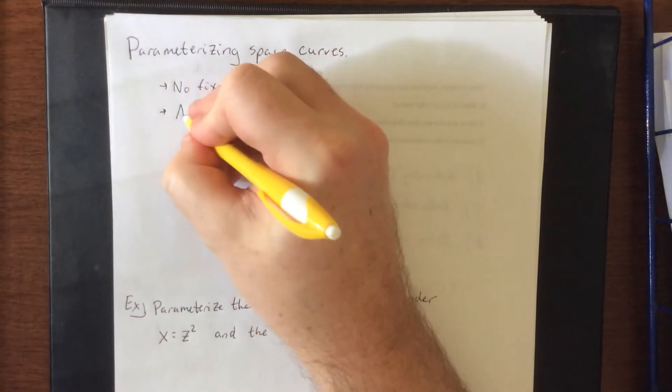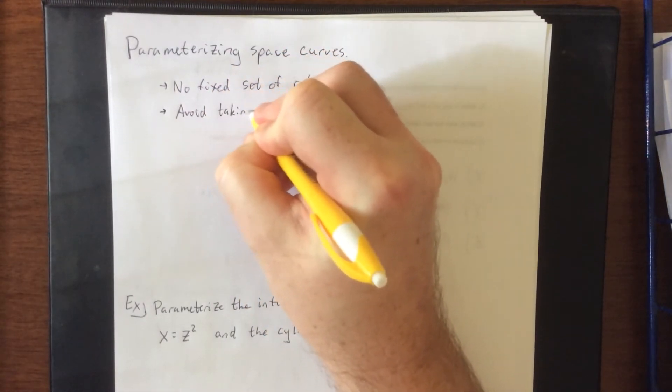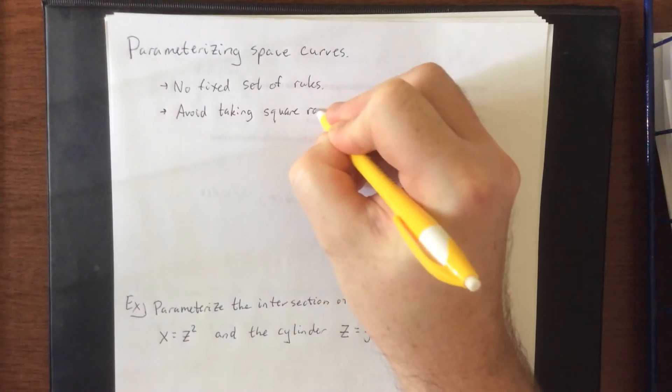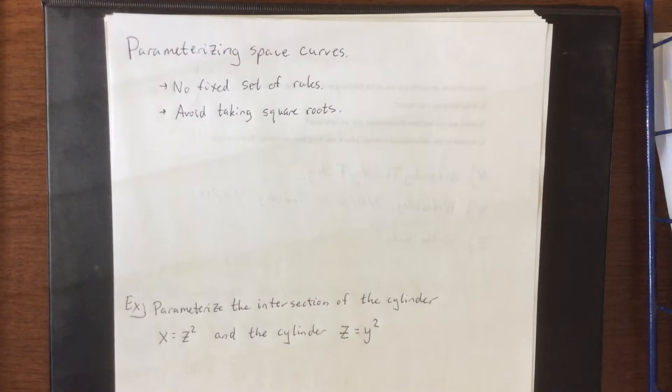One big thing to do is to avoid taking square roots. Big reason for that is when it comes to square roots you wind up with plus or minus the square root and now all of a sudden you have to do multiple parameterizations for one curve.